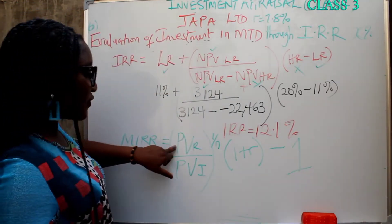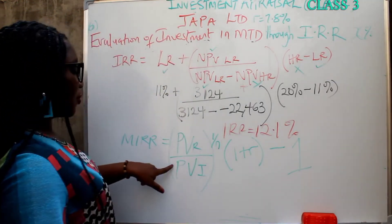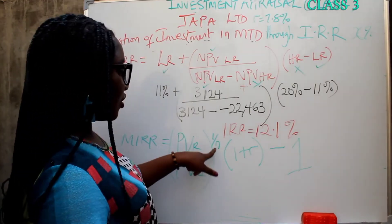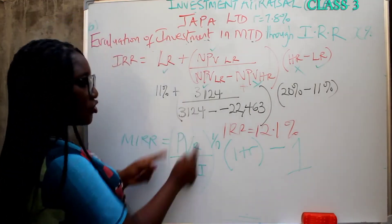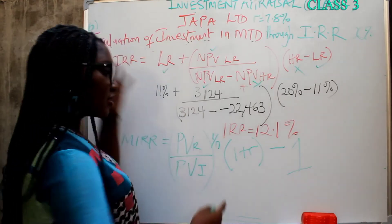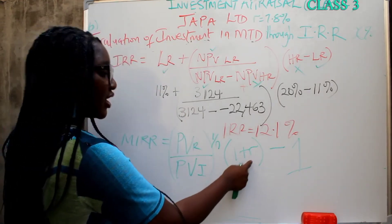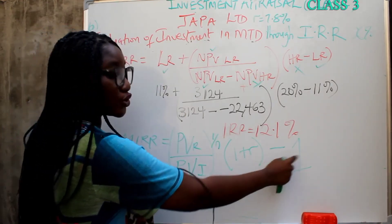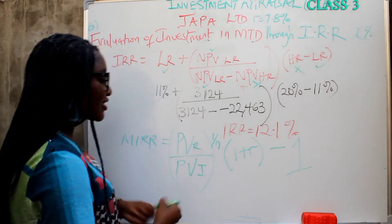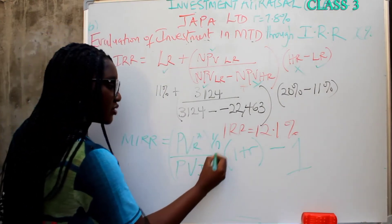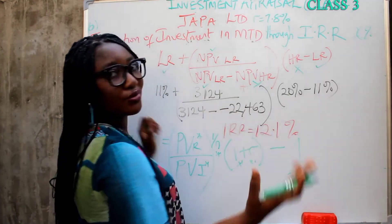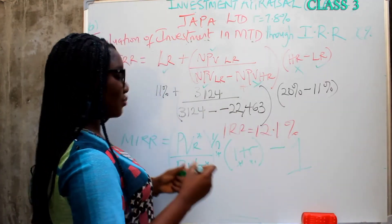Present values of all the revenues over the present value of all the investments, all raised to the power 1 over the number of years, into 1 plus R minus 1. When you have a formula, the first thing is to get all the variables involved and then start solving.